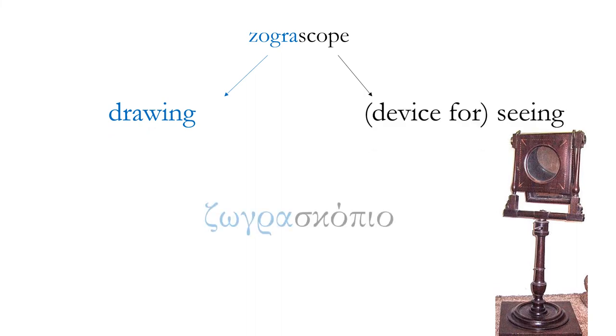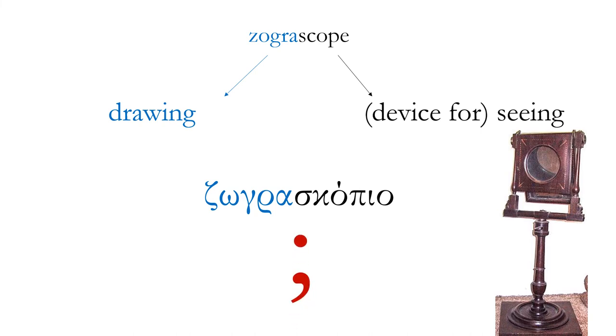This one here, maybe no one will know, this is a zograscope. So zogra means drawing, it comes from zografizo, which means I draw. Zograscopio. Now I've never seen this word in Greek and this device is no longer used anymore. Basically it's just a tabletop device that allows you to examine pictures and check background details.